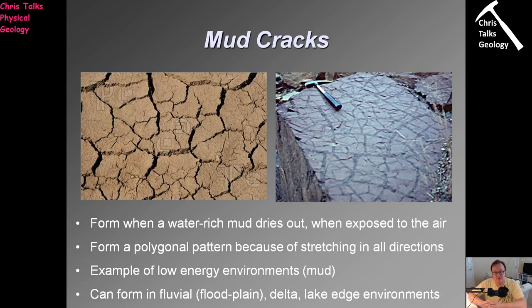Mud cracks tell us we're in an environment with wet mud that is drying out — perhaps a floodplain river in an arid climate, a delta where mud gets wet at high tide and dries when the tide goes out, or a lake edge. Mud cracks simply tell us we have an environment with the deposition of fine wet sediment, meaning water must be nearby, and the environment will typically be relatively warm.